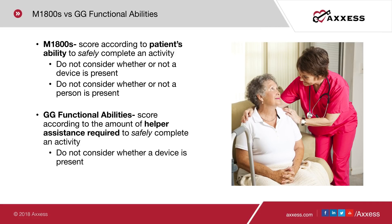For the GG questions on functional abilities, we will score according to the amount of helper assistance required to safely complete an activity. It's not the patient's ability — it's the amount of helper assistance required, and safety has preeminence. Do not consider whether a device is present.